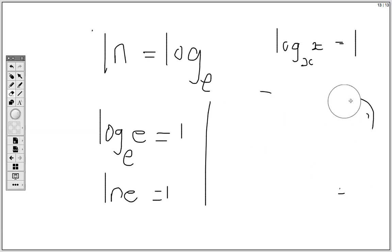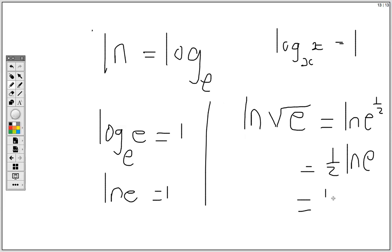And also, if I have ln square root of e, it is the same thing as ln e to the half. Then we can carry the half in front. So my answer is a half.